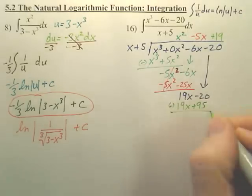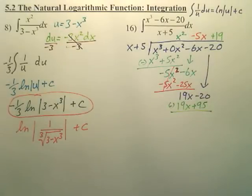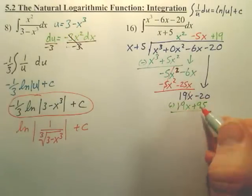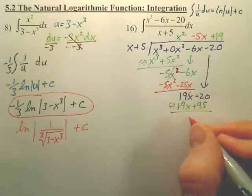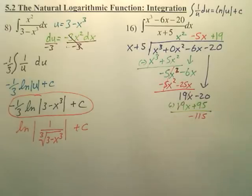And again, you're going to subtract down. Looks like your remainder. Your remainder's going to be what? Negative 115.